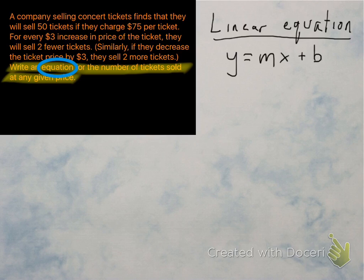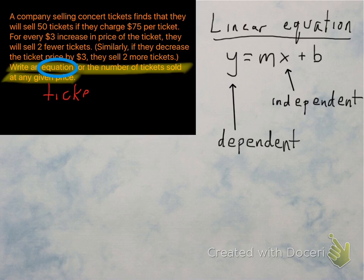But there are two variables here, Y and X. We need to figure out which one is which in our problem. X is what's known as the independent variable and Y is the dependent variable. So when we're looking for our two variables, tickets and price, we need to figure out which one's X and which one's Y.